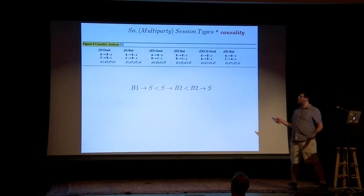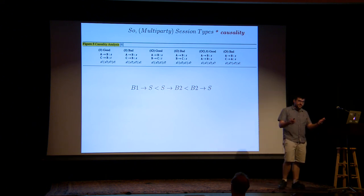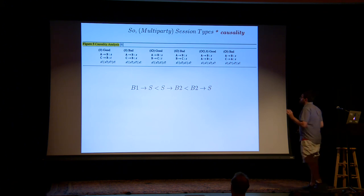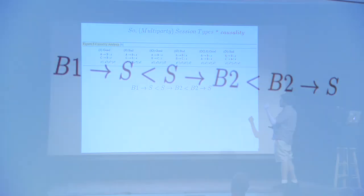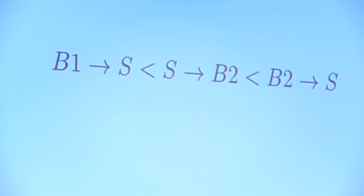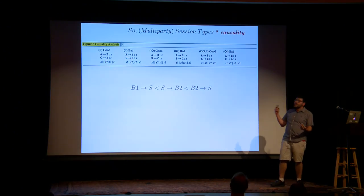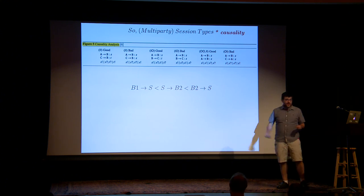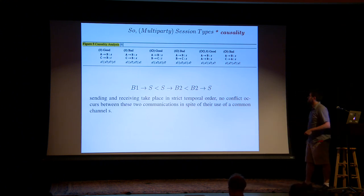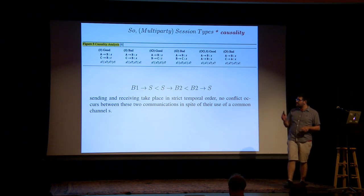Another example can work. The less-than signs here act as partial ordering — you see this in some distributed systems literature. Even though I'm using the same message twice, if I can guarantee a partial order in the relationships between certain ones, then I can guarantee causality and this will pass. That's what session types give you — in a distributed, concurrent nature, I can guarantee this and reject the other program. Sending routines take place in a strict temporal order; no conflict occurs between communications in spite of their use of a common channel.